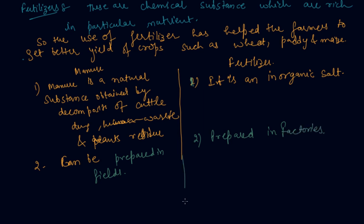So third difference is: manure provides a lot of humus to soil, while fertilizers do not provide any humus to soil.